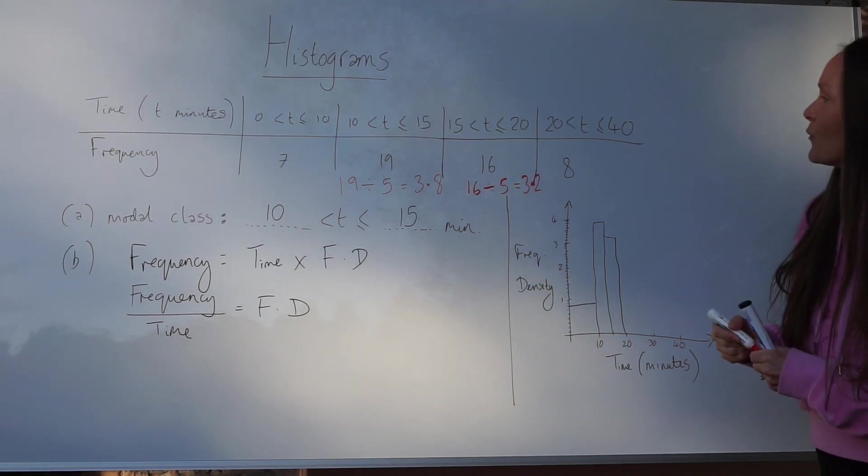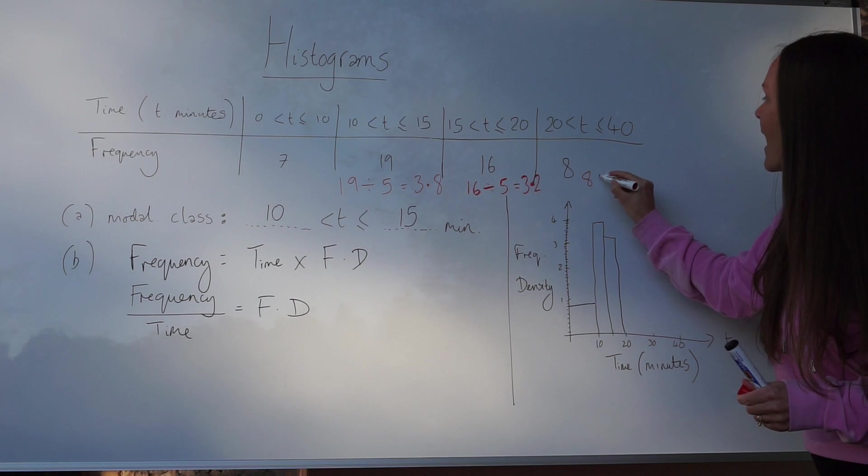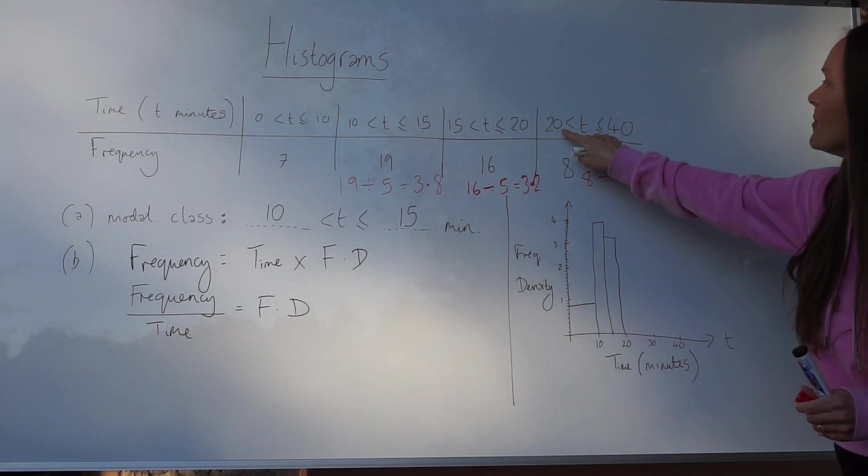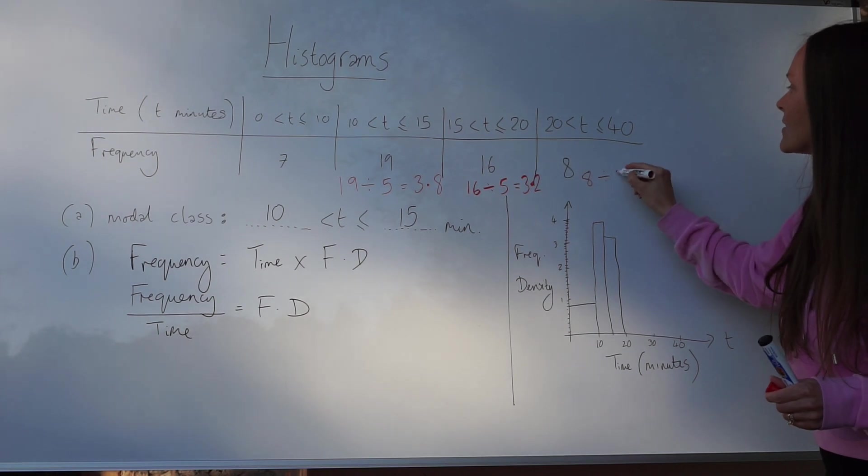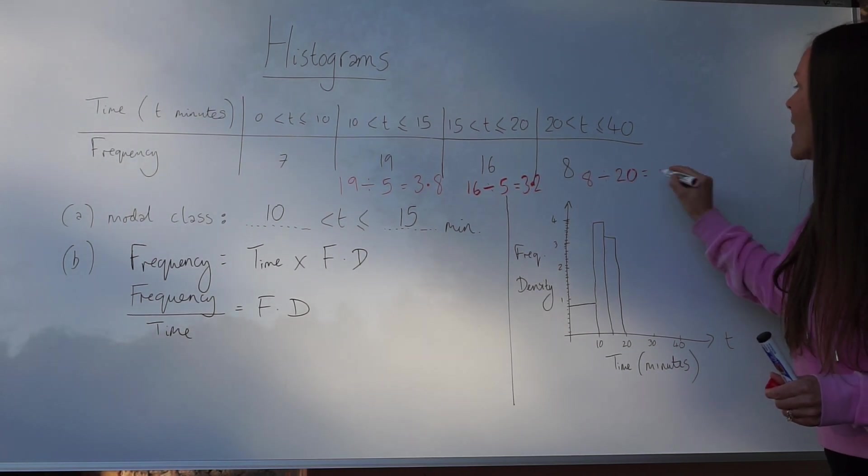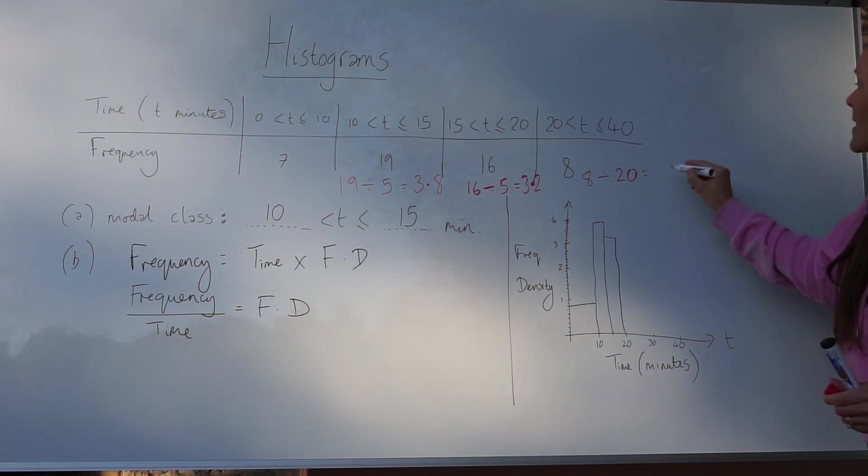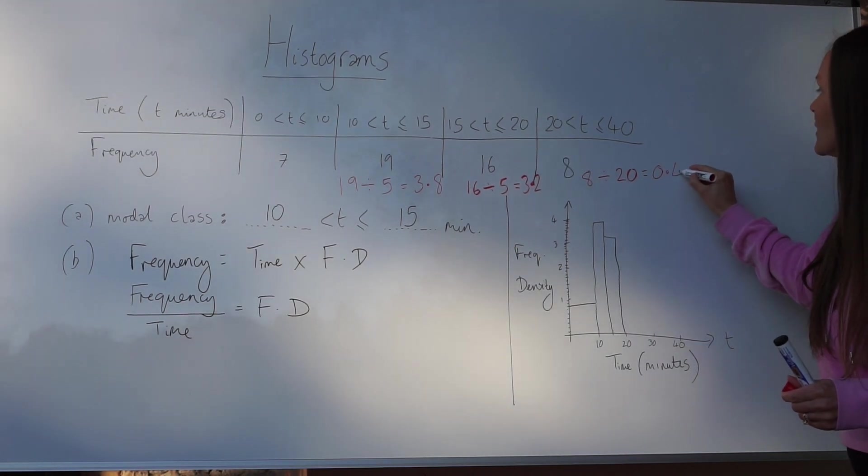For the last one, the frequency is 8 and the class width this time is 20. The difference between these numbers is 20, so we divide by 20. And 8 divided by 20 is 0.4.